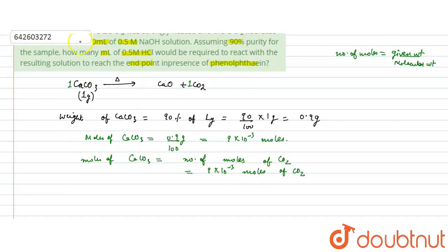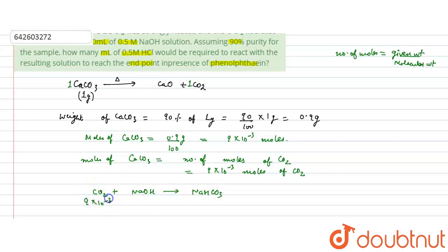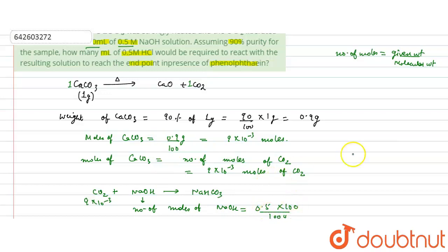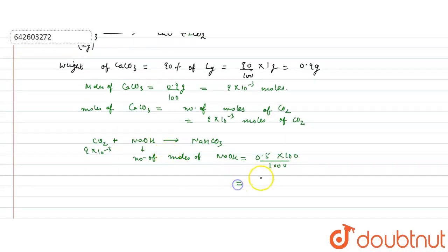The carbon dioxide liberated is absorbed in the NaOH solution. The reaction is: CO₂ + NaOH → NaHCO₃ (sodium bicarbonate). The moles of CO₂ are 9 × 10⁻³. The volume of NaOH is 100 mL and its concentration is 0.5 molar, so its moles = 0.5 × 100/1000 = 50 × 10⁻³ moles.